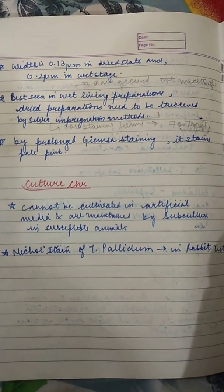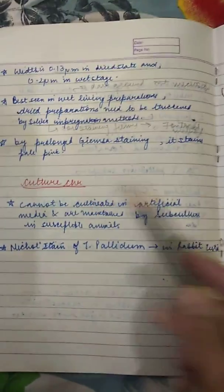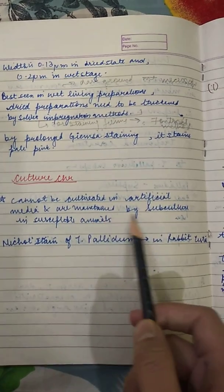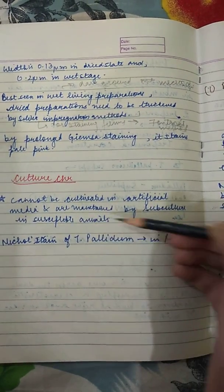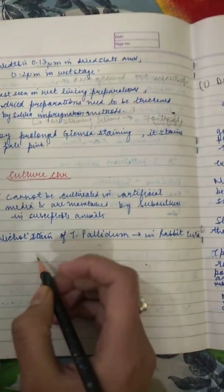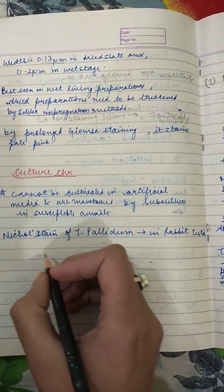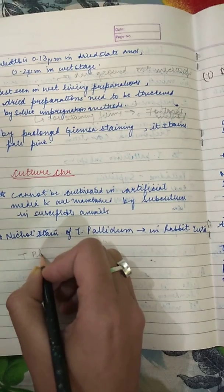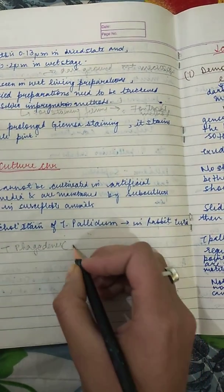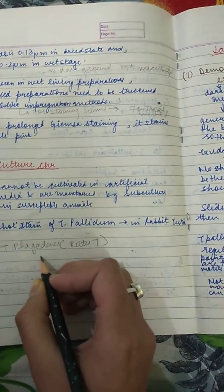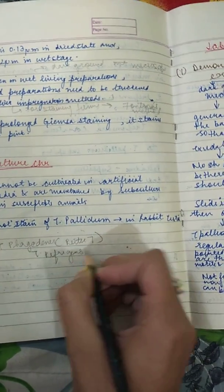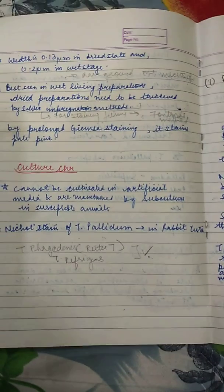As mentioned earlier, gram-negative cell wall stains pink or red. Regarding cultural characteristics, Treponema cannot be cultivated in artificial media and is maintained by subculture in susceptible animals — for example, in rabbit testes. The Nichols strain of Treponema pallidum is used for this. Some non-pathogenic treponemas like Treponema phagedenis, also known as Reiter treponema, and Treponema refringens can be cultivated.